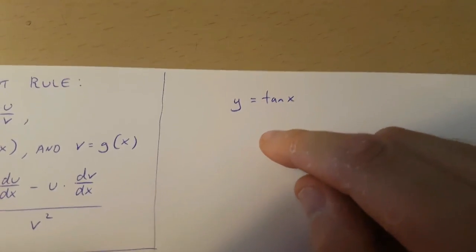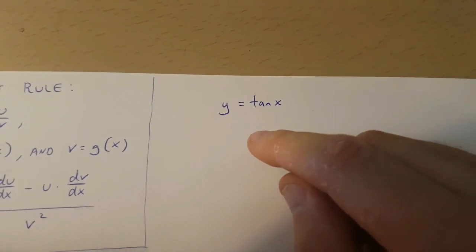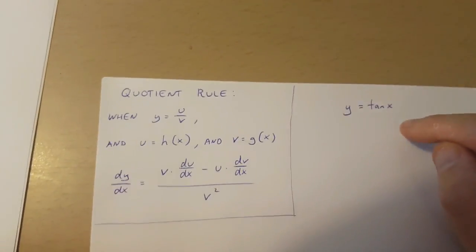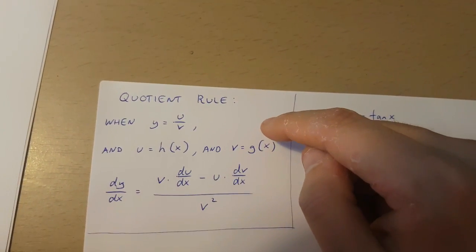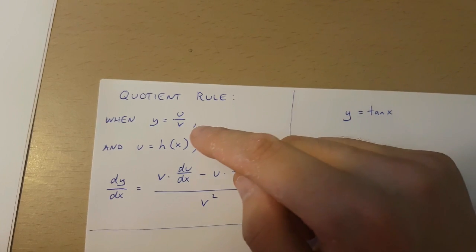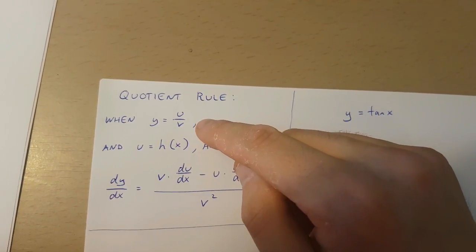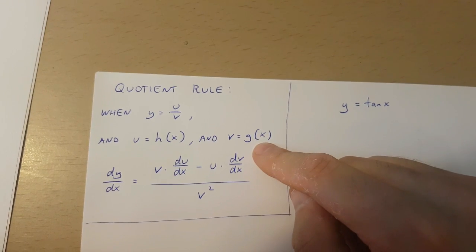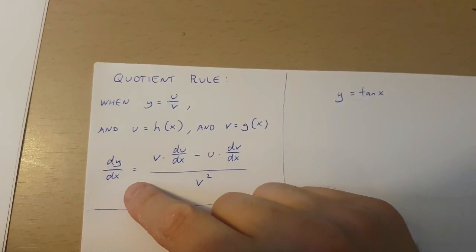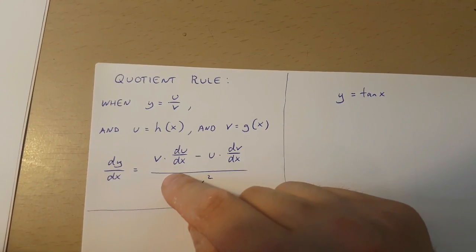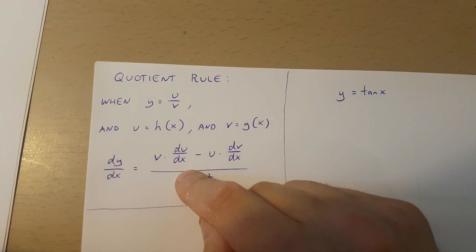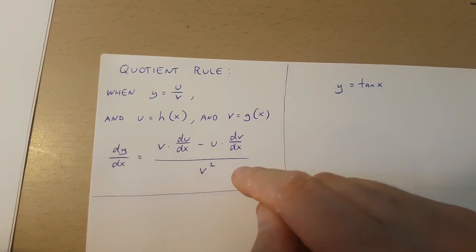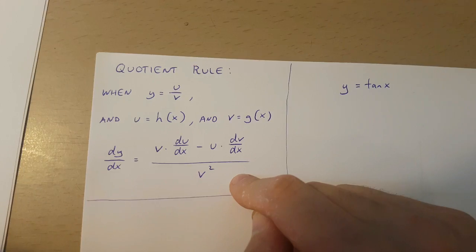In this video I'm going to be showing you how to differentiate y equals tan x using the quotient rule. The quotient rule goes like this: when y is u over v, and u is a function of x, and v is a function of x, then dy over dx is v times du over dx minus u times dv over dx, all over v squared.